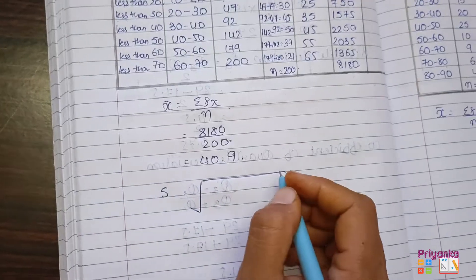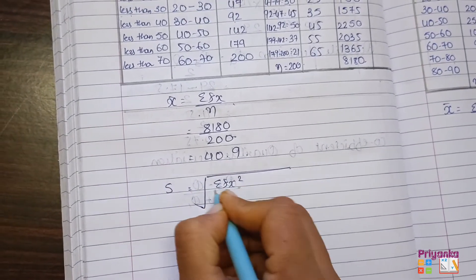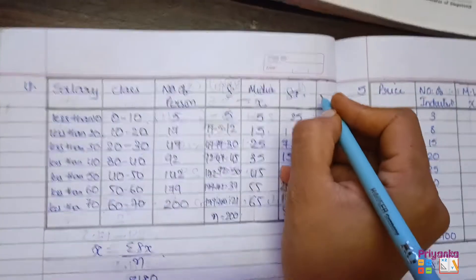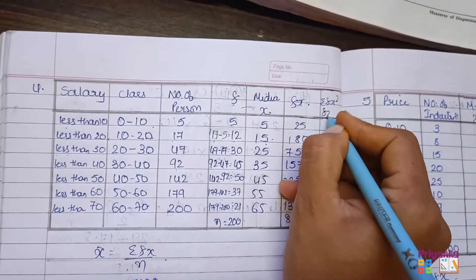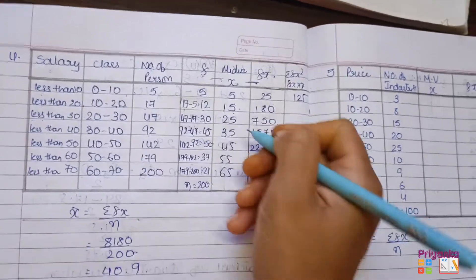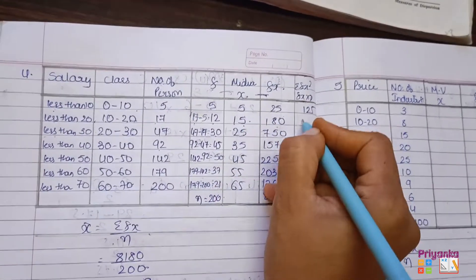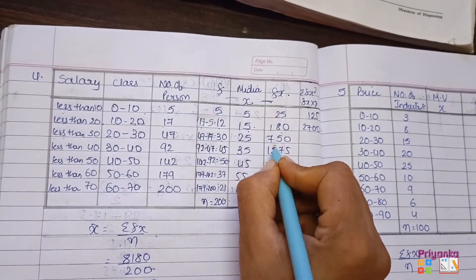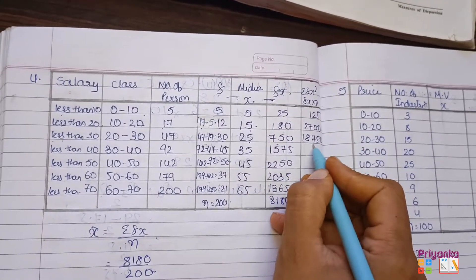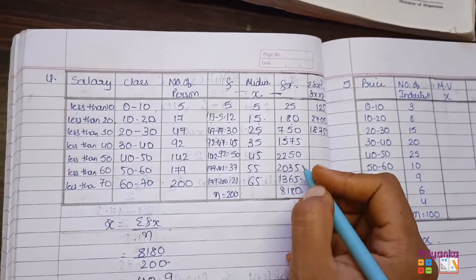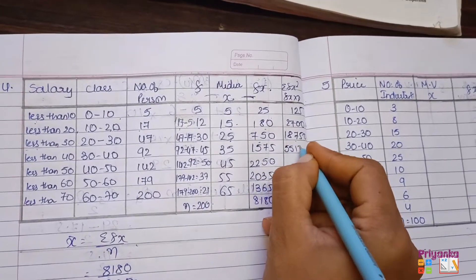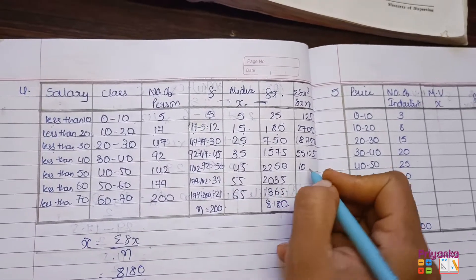As the question is asking about standard deviation, the formula will be: sigma = square root of (sigma Fx² upon n) minus (sigma Fx upon n) whole square. So for this we need sigma Fx². For this, the Fx column will get multiplied by x: 5 into 25 is 125; 180 into 15 is 2700; 750 multiplied by 25 is 18,750. This increases the numbers, which is why many people use the shortcut method, but here I kept the common formula for the whole video — no confusion, just one formula to remember.